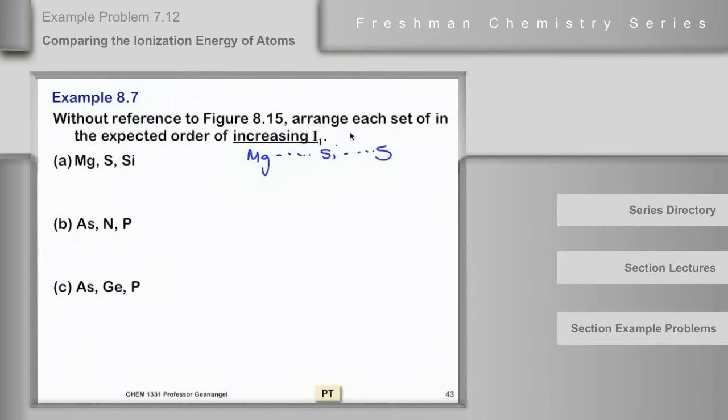The ionization energy generally increases in the direction from left to right, as we just said, although there could be some discontinuity in it, and it increases from the bottom to the top, which doesn't apply here. So we can see in this case, the lowest ionization energy on this period should be magnesium, and then silicon, then sulfur should have the highest ionization energy. Questions on that one?